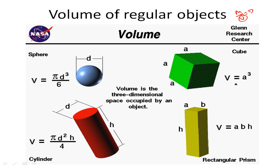Regular objects are basically objects that have formulas that we can use to find volume. Let's do an example of a cube. We know the volume of a cube equals its length times itself three times. So let's say that this cube has a length of 5 centimeters. To find its volume, I would multiply 5 centimeters by itself three times: 5 times 5 times 5. 5 times 5 is 25, times 5 is 125 centimeters cubed.